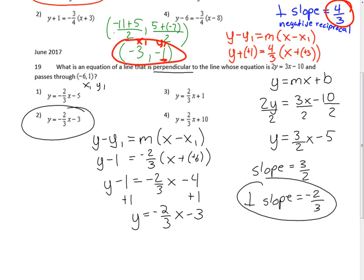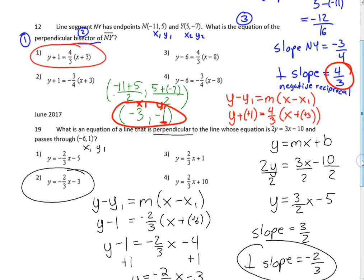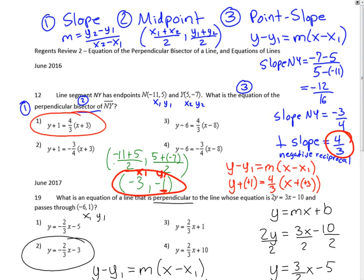One strategy for multiple choice: once you find the slope, plug into your graphing calculator to see which equation passes through the given point. If you know the slope is -2/3, you know it's choice 1 or 2. This is a commonly asked question appearing in the last two June exams. They could also ask for a parallel equation - when parallel, it has the same slope. See you in video three.